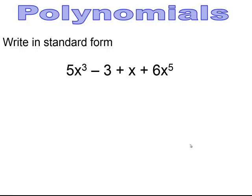Pause and try. When you rewrite in standard form, starting with the highest exponent all the way down to the constant, you should have gotten 6x⁵ + 5x³ + x − 3.